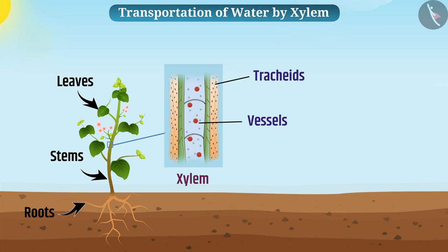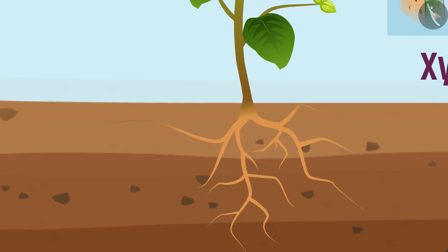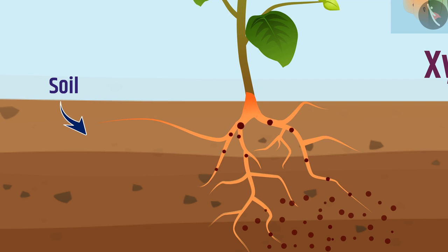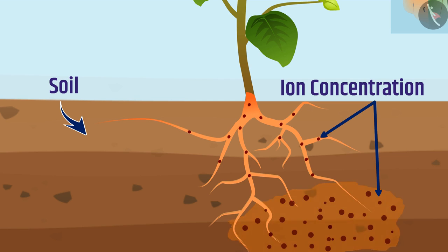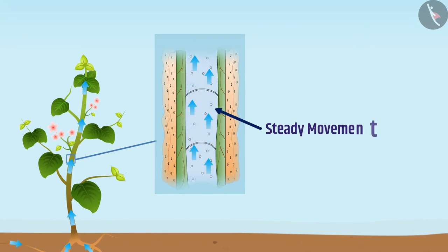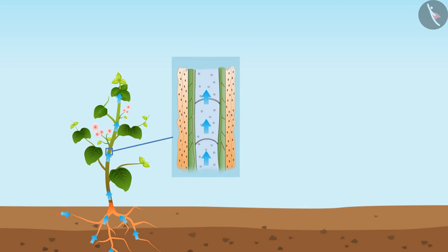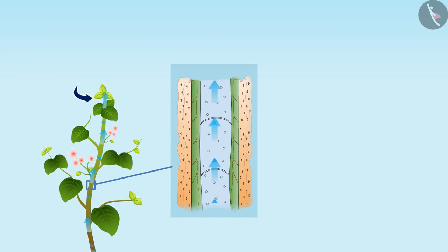Tracheids and vessels in the xylem transport water and minerals in the form of ions. Root cells actively absorb ions from the soil, creating a difference in ion concentration between roots and soil. To remove this difference, water enters the roots from the soil and enters the xylem. The steady movement of water creates a column pushed upward by pressure developed by root cells — this is called root pressure.